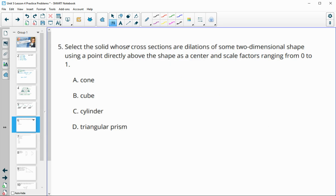Number five, select a solid whose cross sections are dilations of some two-dimensional shape using a point directly above the shape as the center and scale factors from zero to one. So this is meaning that it's going to be getting smaller as we go up to this point. So we have some shape down here, dilations all the way up to this point, disappearing to this point. So that would work for a cone.